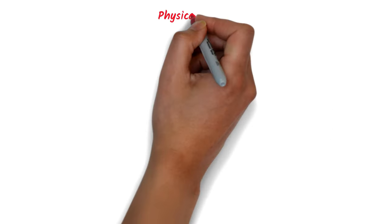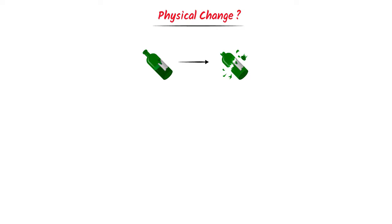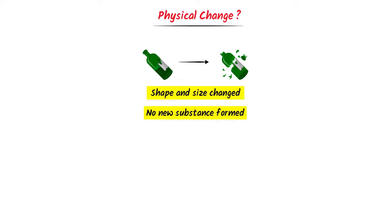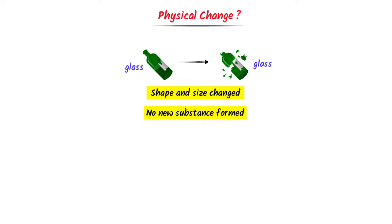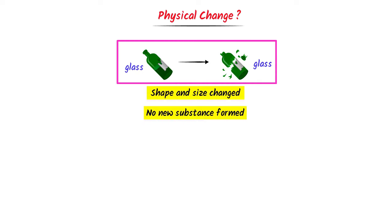What is physical change? Consider this glass bottle. Let it fall and break down into several pieces. The shape and size of the bottle is changed but no new substance is formed. The particles of the bottle are still glass. So we say that it is a physical change.